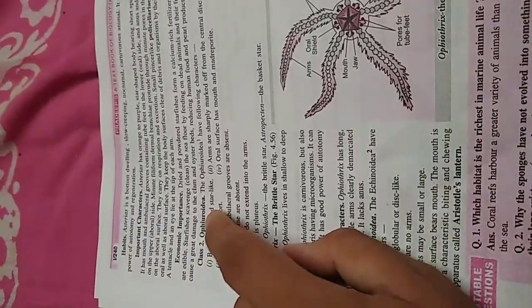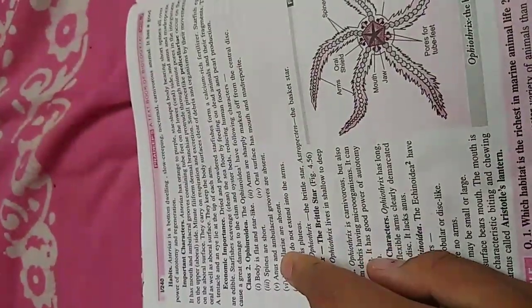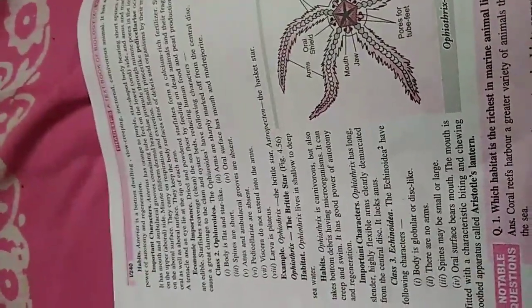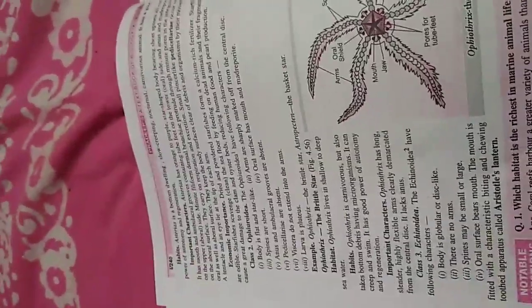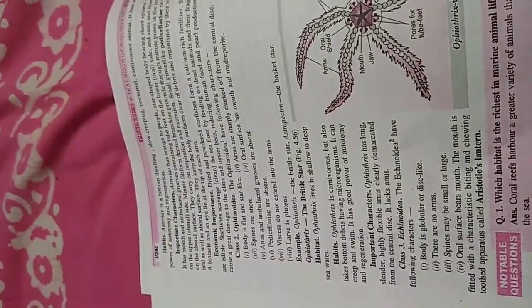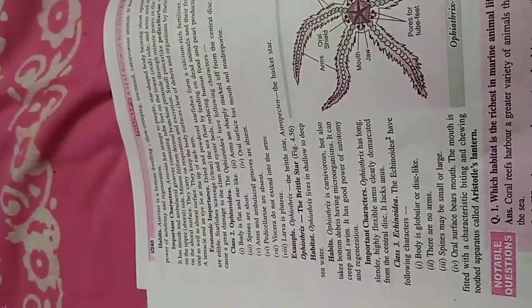The second class is Ophiuroidea. Ophiuroidea have the following characters: body is flattened and star-like. Arms are sharply marked off from the central disc. Spines are short. Oral surface and mouth with madreporite. Pedicellariae are absent. Viscera do not extend into the arms. Examples: brittle star and basket star.